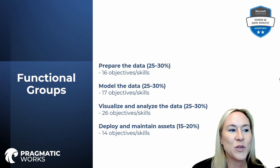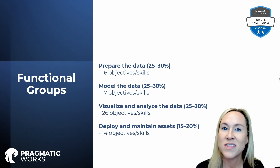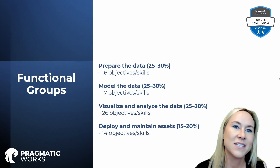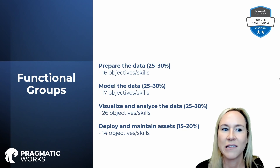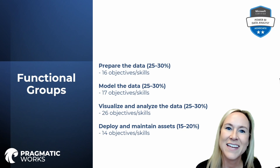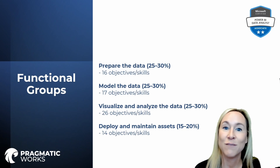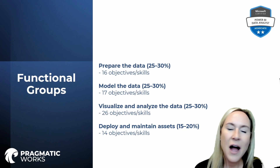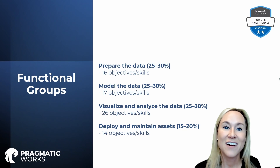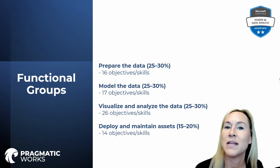On the exam, there are four functional groups you are expected to be familiar with and able to demonstrate skills in Power BI Desktop or the Power BI service. The four functional groups are: prepare the data, model the data, visualize and analyze the data, and deploy and maintain assets. The first three are about equally weighted at roughly 25 to 35 percent each, making them the bulk of the exam. Deploying and maintaining assets makes up 15 to 20 percent.